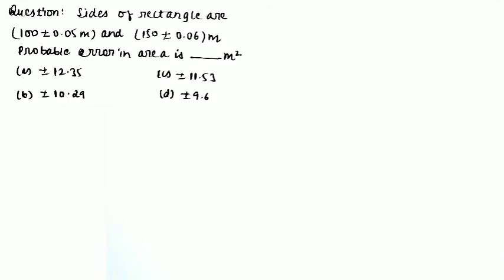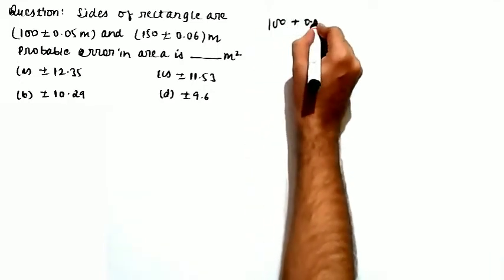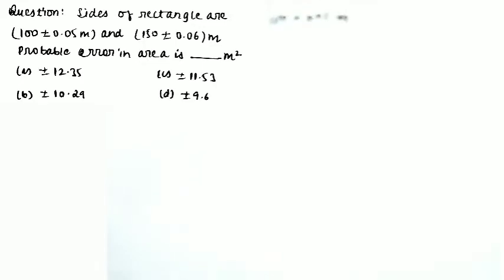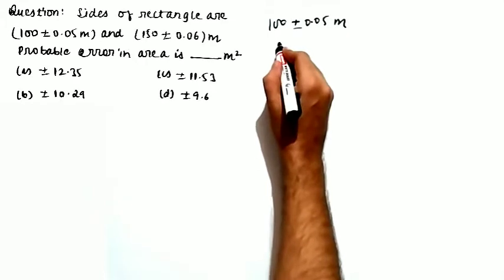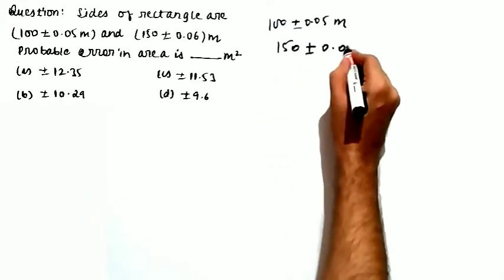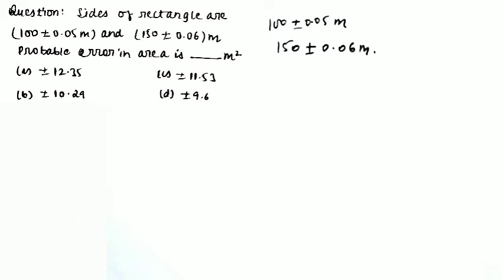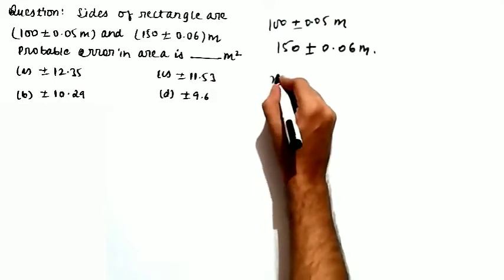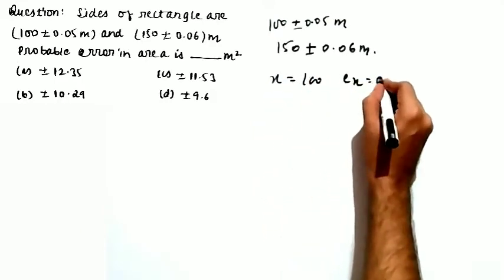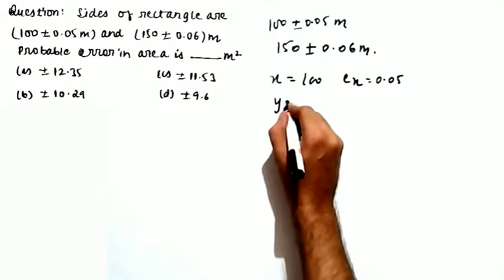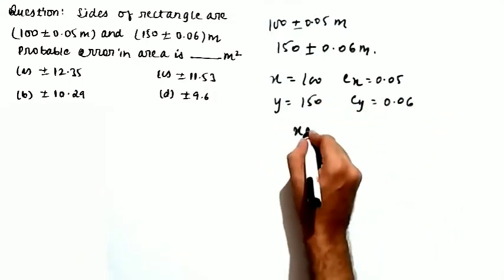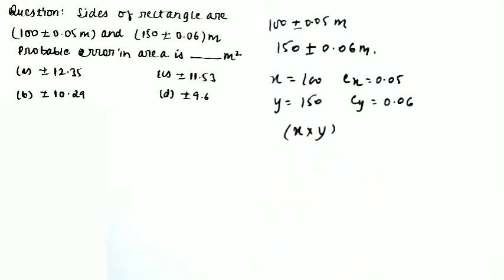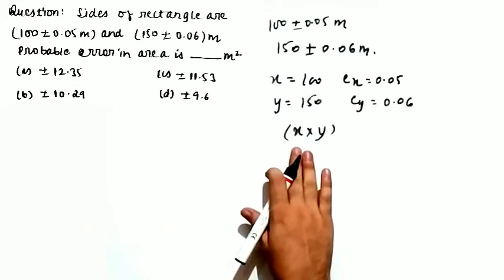You are given the sides of a rectangle: one side is 100 ± 0.05 meters, and the second side is 150 ± 0.06 meters. You are asked to calculate the probable error in the area. Let x = 100, ex = 0.05, y = 150, ey = 0.06. Since area = x × y, you need to find the error in x × y.